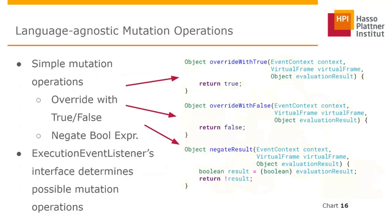How do we specify mutation operations? Since we use execution event listeners, the interface determines what you can do. We implemented simple mutation operations related to boolean expressions: overwriting with false, overwriting with true, and negating a boolean expression. The interface provides a context, virtual frame object, and the previous evaluation result — which in our cases we didn't need to use, but you can use them if required.